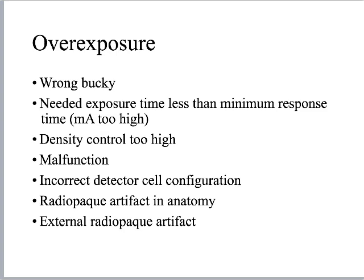This is where all of this relates to image production. There are two things that can happen if we misuse the AEC — overexposure and underexposure. For overexposure — what could cause an exposure indicator that's too high? In film, the picture's blackened or burned out. In digital, the exposure indicator is too high, or in a Fuji system the S number is too low because it's inverse. First cause: wrong Bucky — I did not activate the correct one. Second: the needed exposure time was less than the minimum response time, meaning the mA was set too high.